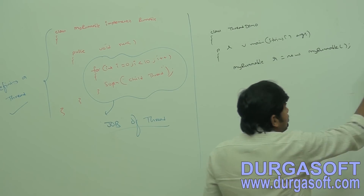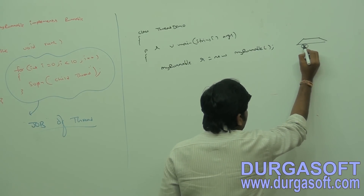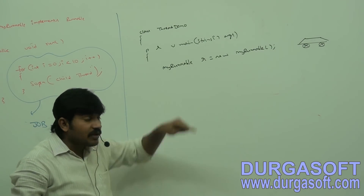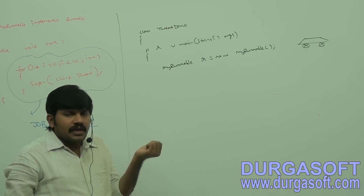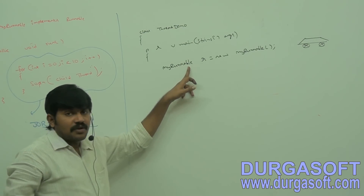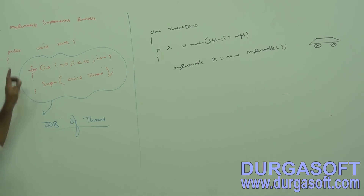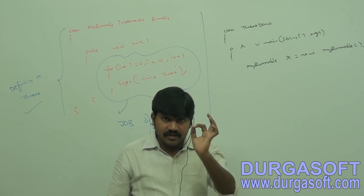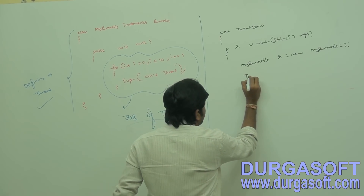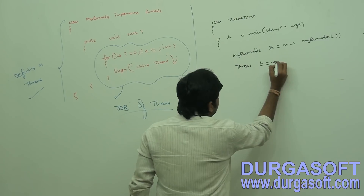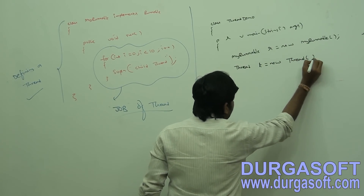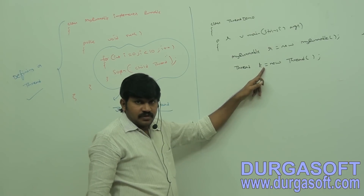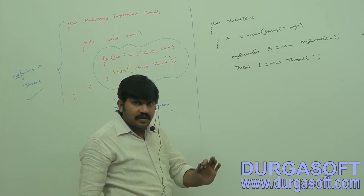One Runnable object is ready — like a car that is ready, but someone is required to drive it. MyRunnable doesn't have start capability, and Runnable doesn't have start capability either. Thread has that capability, so we create a Thread object: Thread t = new Thread(). This line is also executed by the main thread.